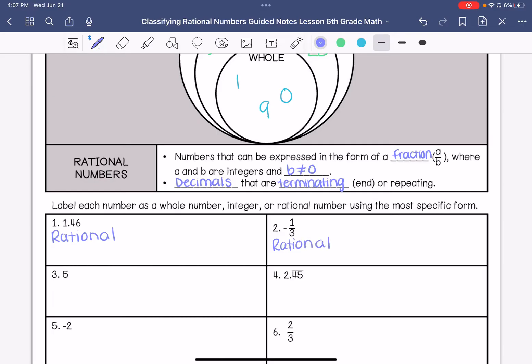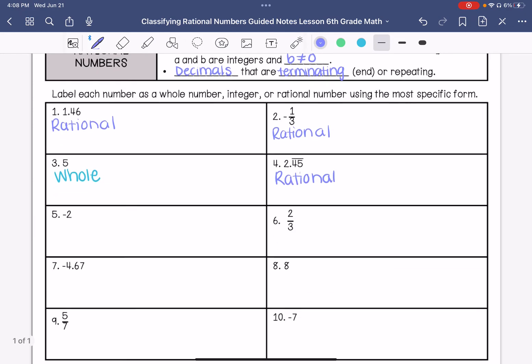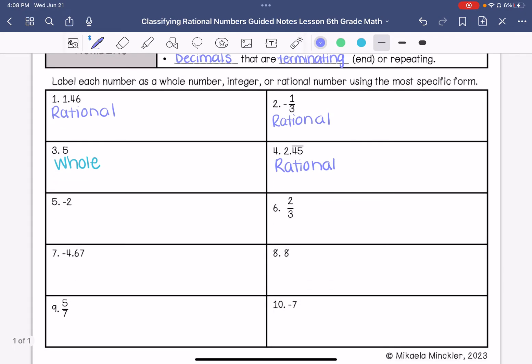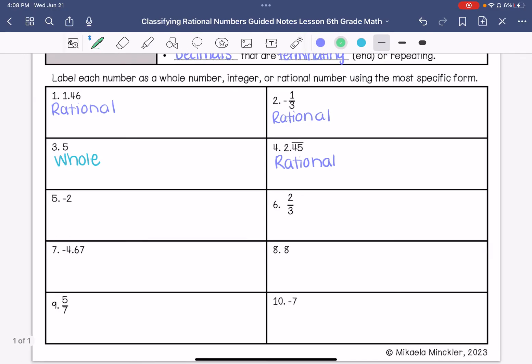Number 3, which is 5, is going to be a whole number. Number 4 is 2.45 repeating, that's going to be a rational number. Number 5 is negative 2, that is going to be considered an integer.